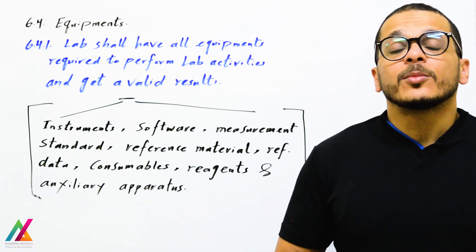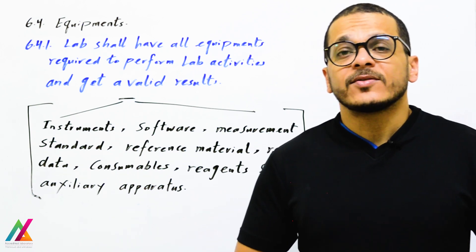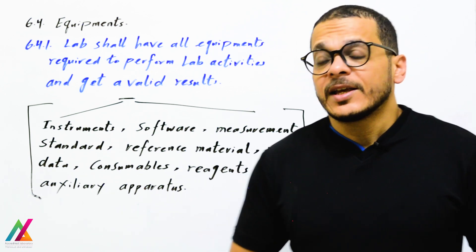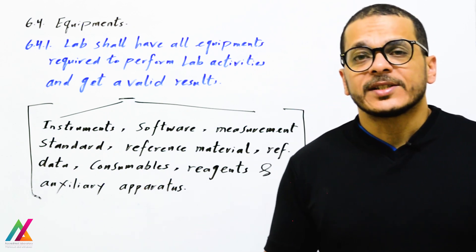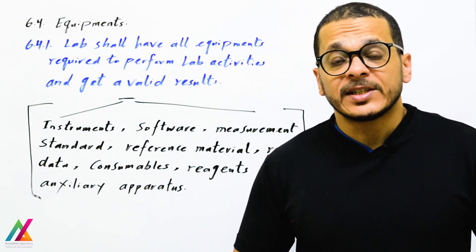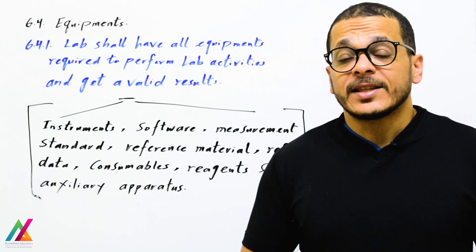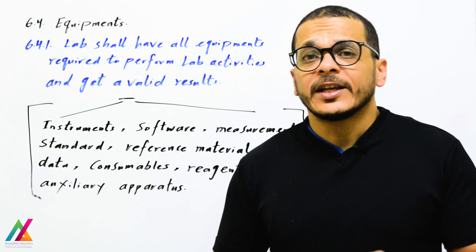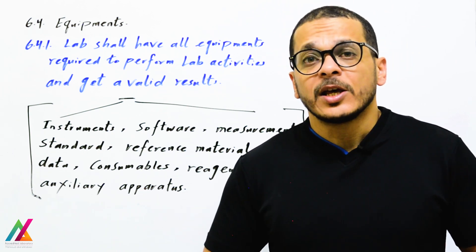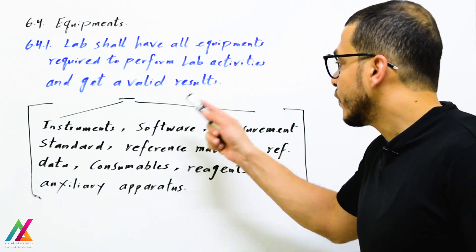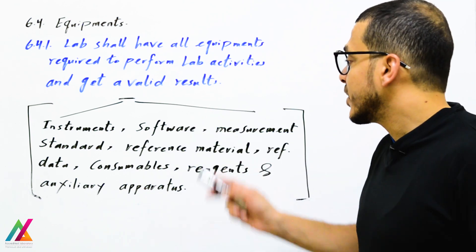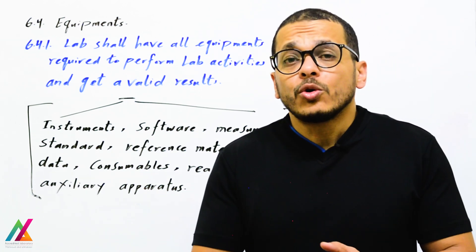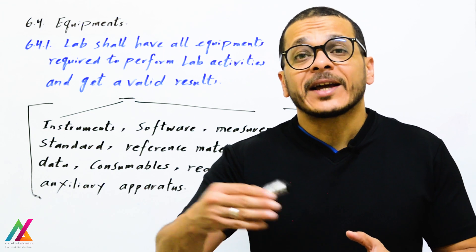Welcome back. This is a very important lecture on ISO IEC 17025 2017 edition, covering resources requirements and equipment. The lab shall have all equipment required to perform lab activities and get valid results. In the new 2017 edition, equipment is defined differently than in the 2005 edition — it doesn't only include instruments and auxiliary apparatus, but also software, measurement standards, reference materials, reference data, reagents, and consumables.